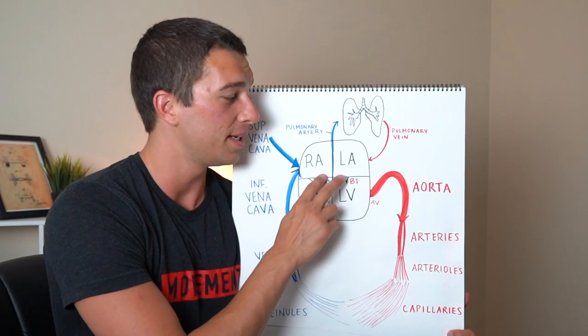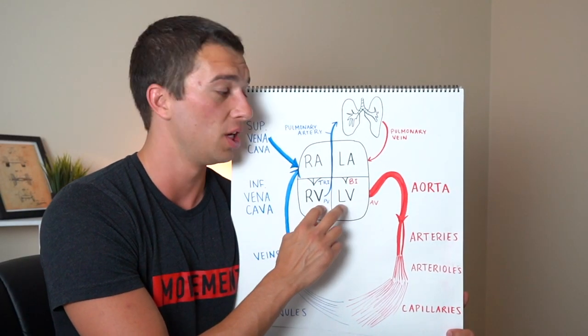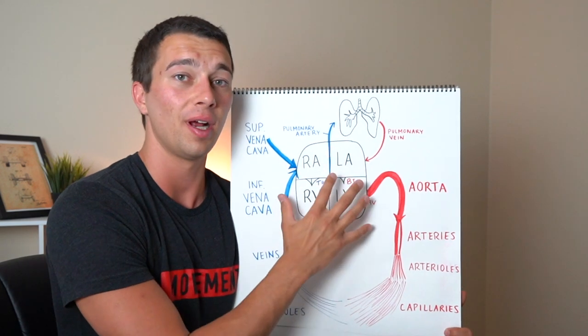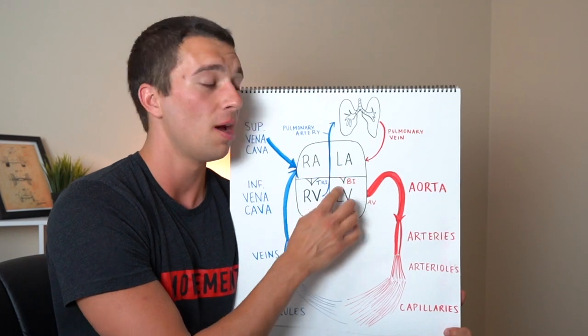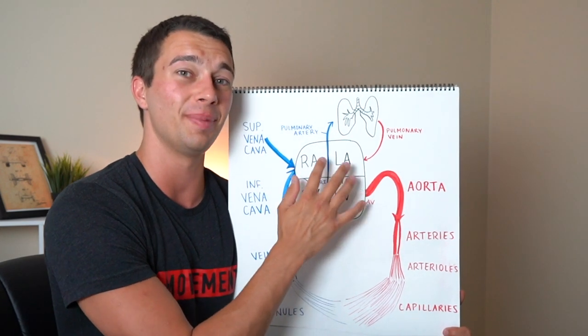All right so let's start off here talking about the atria and the ventricles. So this right here is the heart, represented as four chambers. Technically the ventricles in general are bigger but we just broke these up into quadrants to keep it simple.